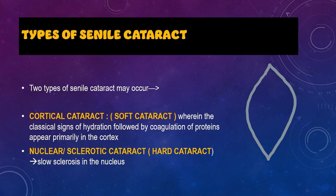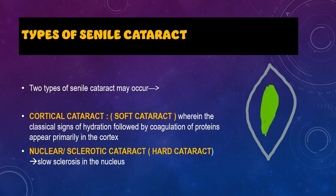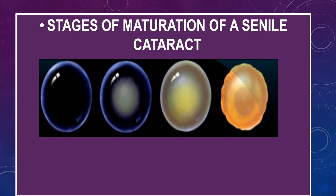Coming to the types of senile cataract: based on the area getting opacified, if the cortex is affected it is called a cortical cataract, and if the nucleus is getting opacified it is called nuclear cataract or nuclear sclerotic cataract. A cortical cataract is usually a soft cataract and a nuclear cataract is usually a hard cataract to deal with.